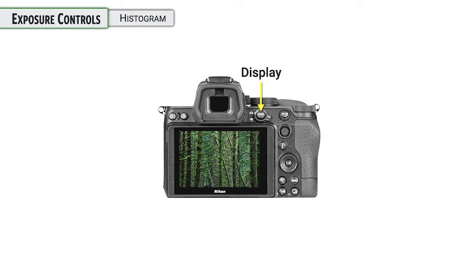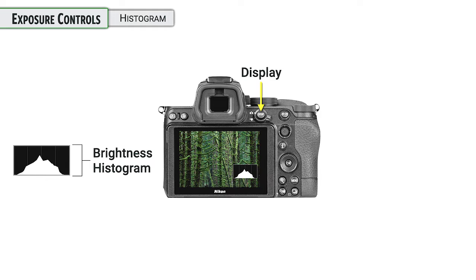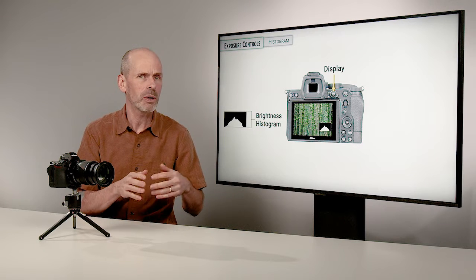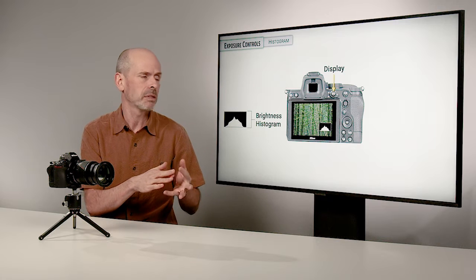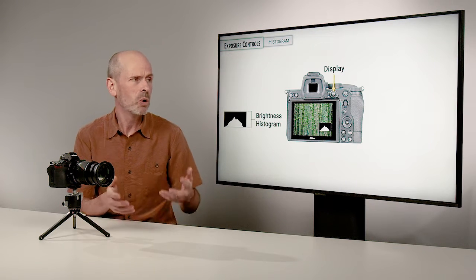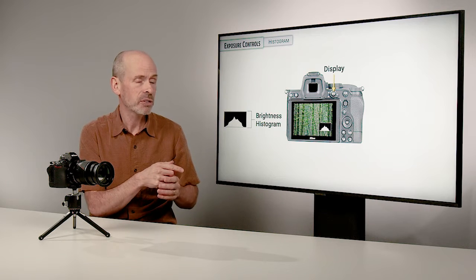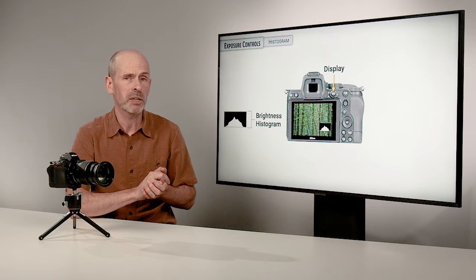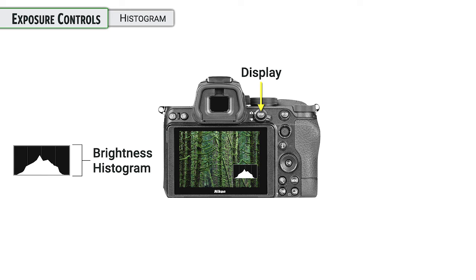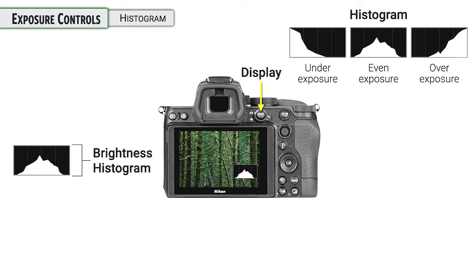One of the best ways of judging if you have the correct exposure is with the histogram. The histogram is a graph that shows you whether it's a proper exposure — how bright are the brightest parts, how dark are the darkest parts, and where is most of the information. You can see this anytime by pressing the display button — you may need to hit it several times — and it can be very handy. It's as good as the exposure indicator for judging the exposure.